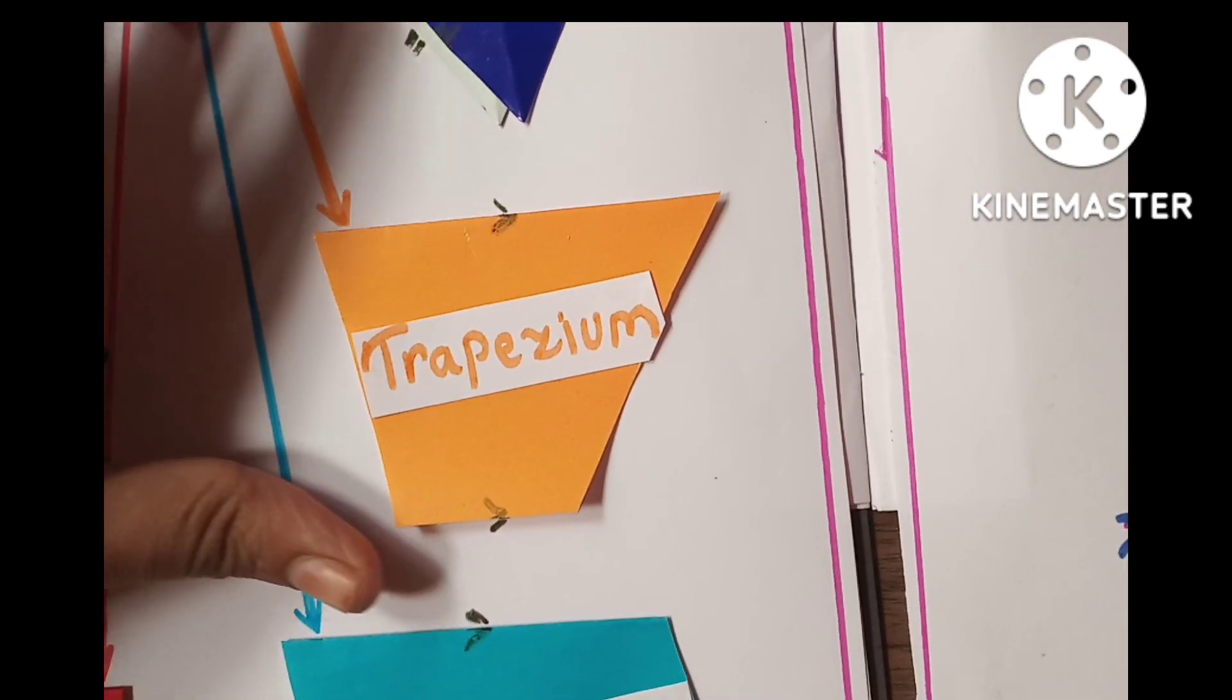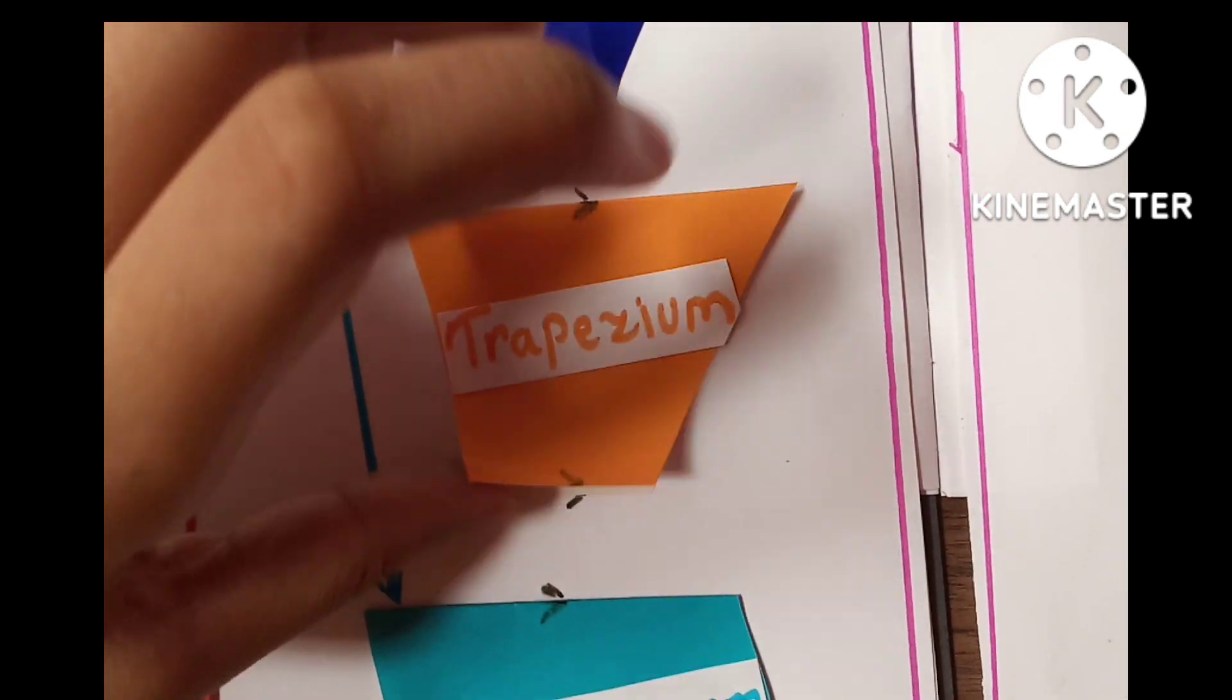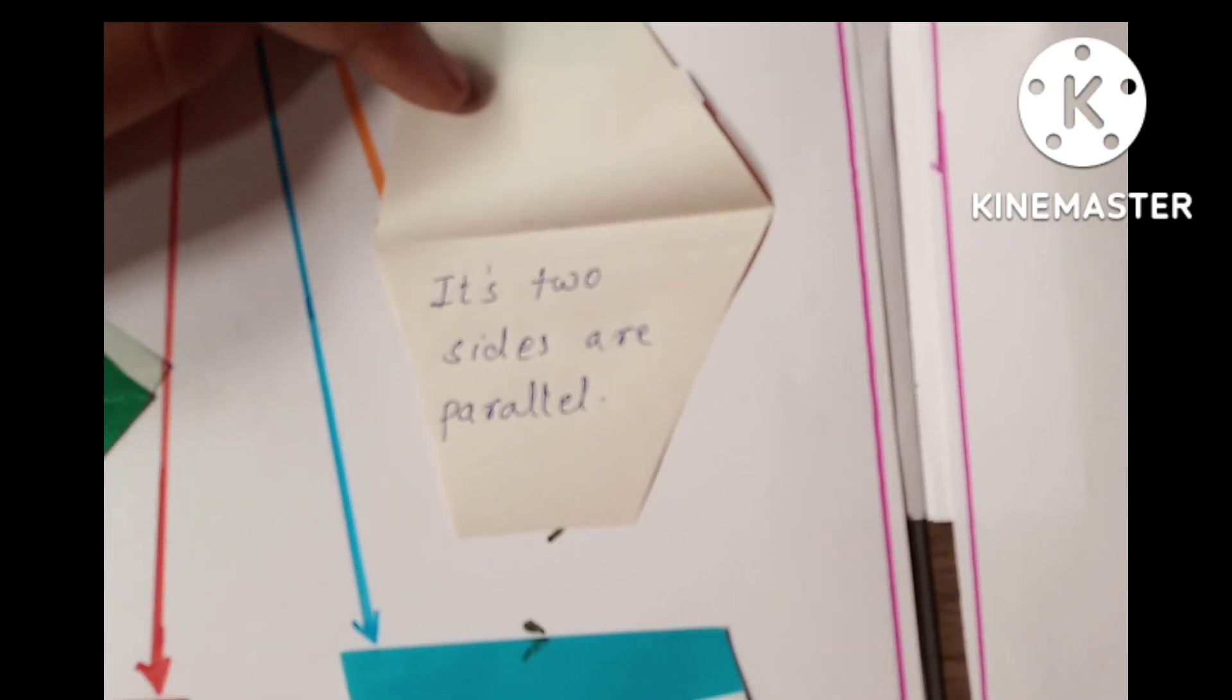Fourth one is rhombus. Here is its properties.